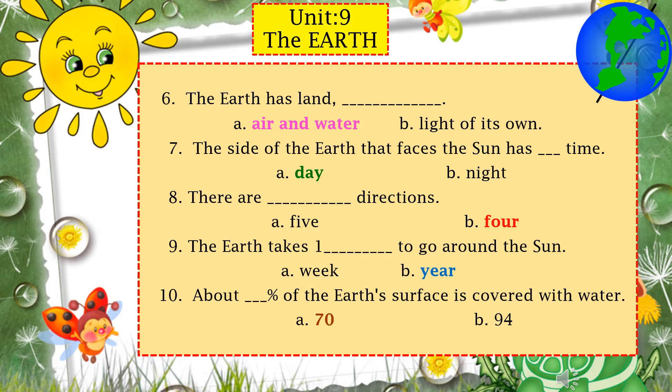Number seven: the side of the earth that faces the sun has dash time. It's very easy — the side of the earth that faces the sun has day time or night time? Yes, day time. Because it is the side facing the sun and is obviously getting light from the sun, so it has day time.